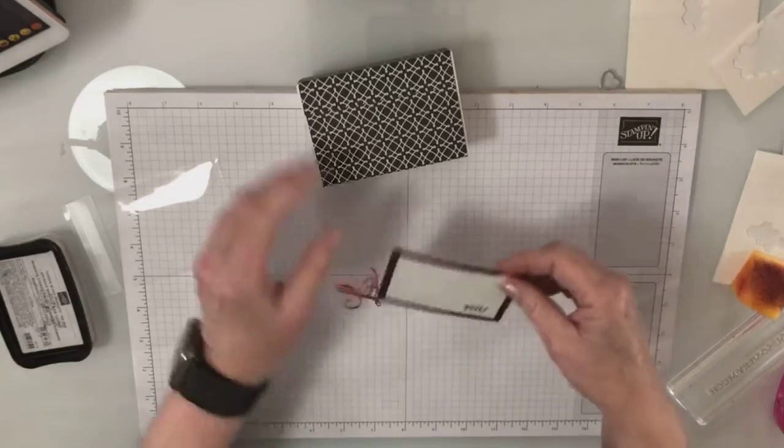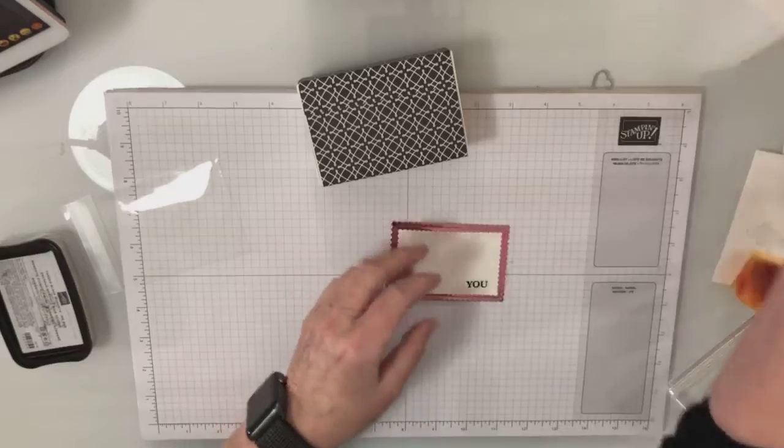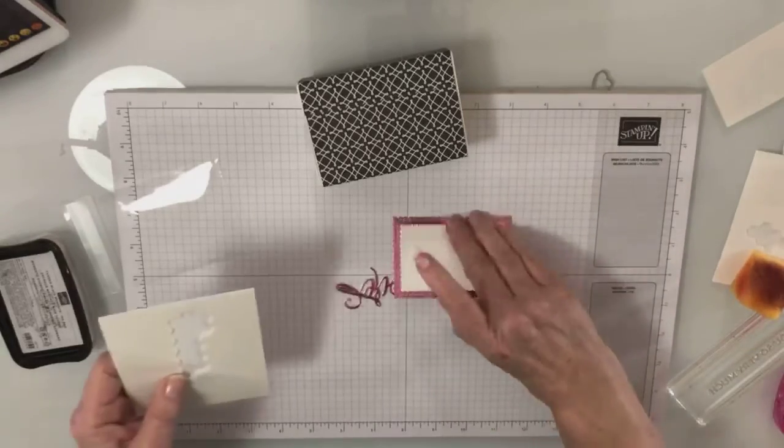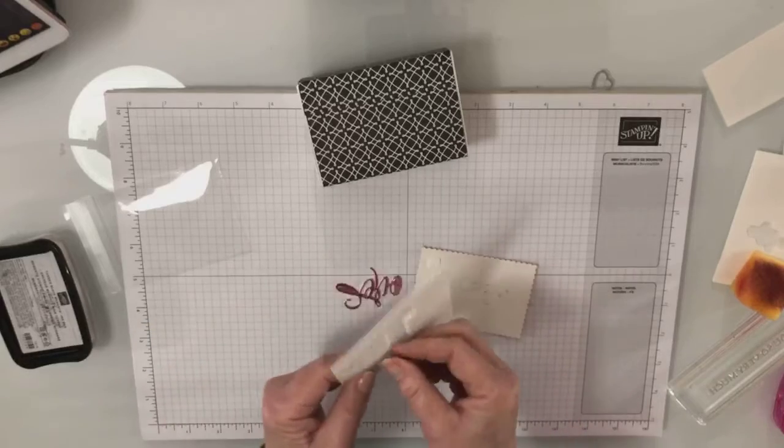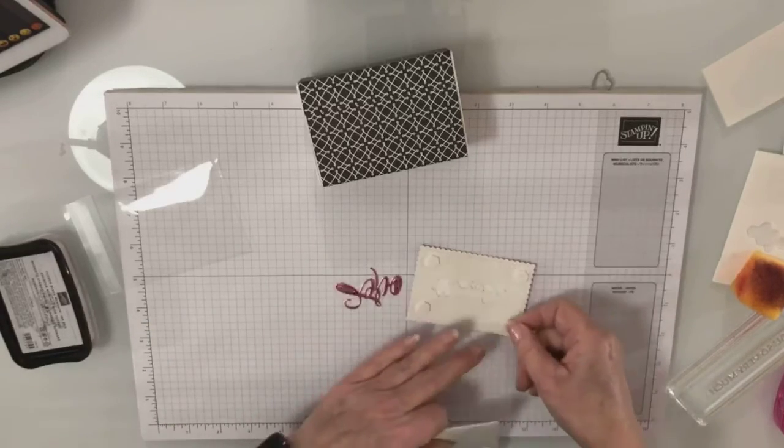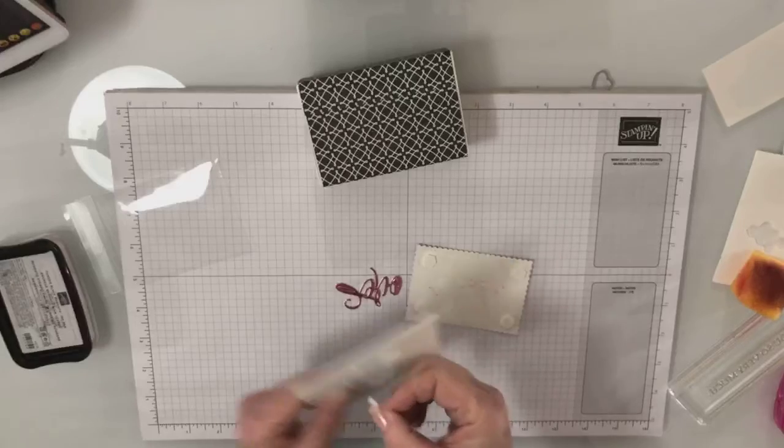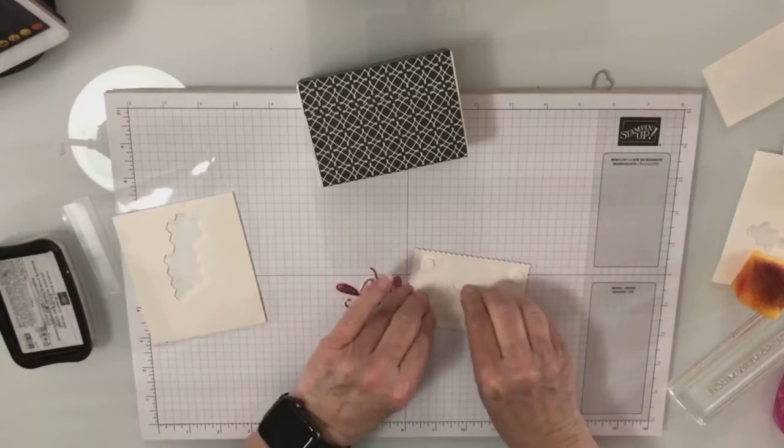This is going to go on the box and I'm going to use dimensionals. Just put one on each corner. No one's ever going to know I cut that thanks out of there because it's going to go on the box.